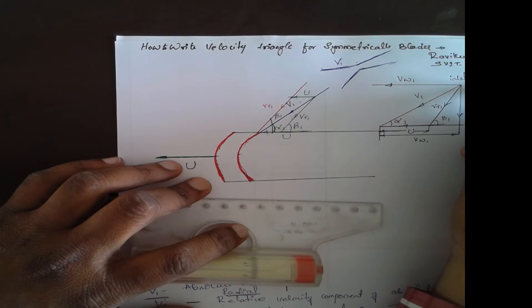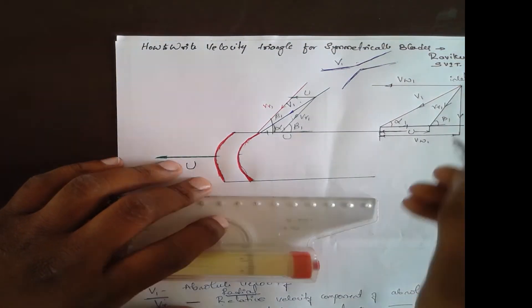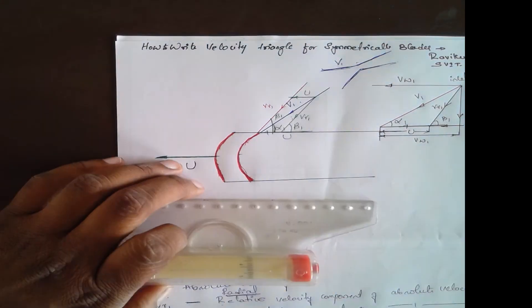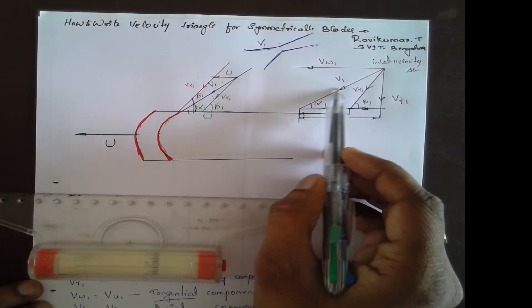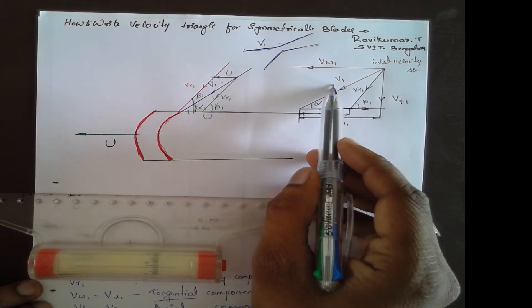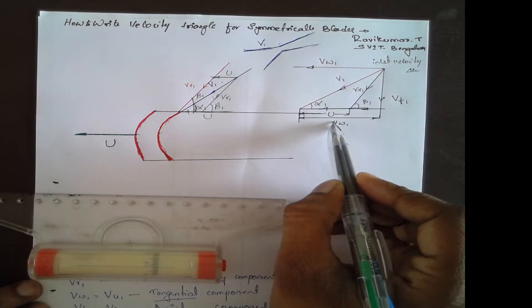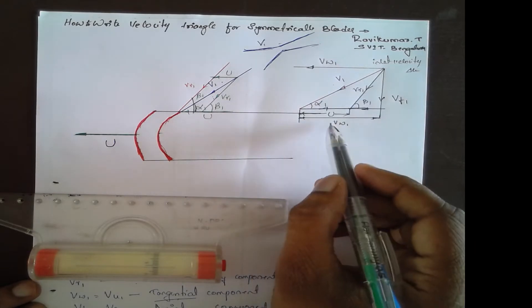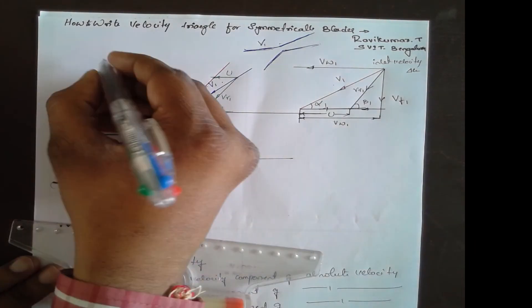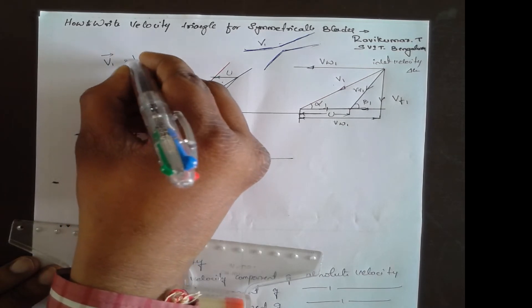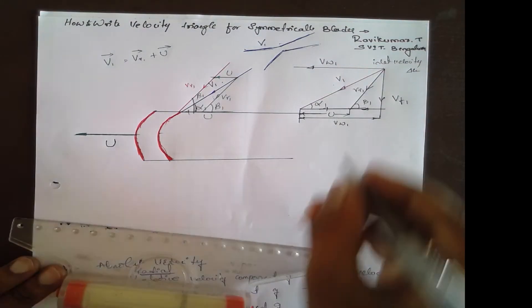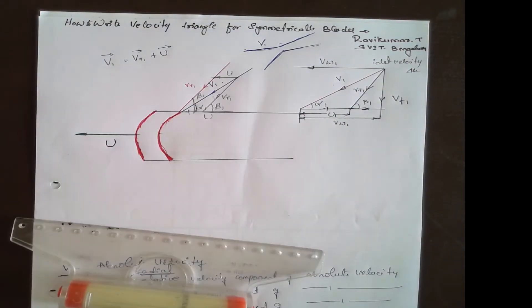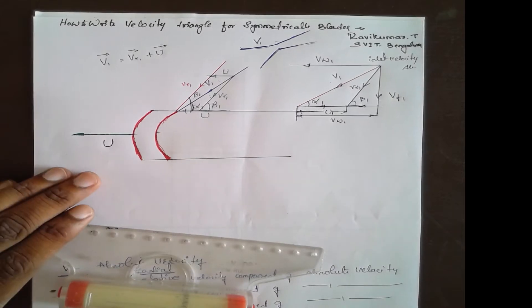This completes the inlet velocity triangle. Always remember: the direction tends towards v1, meaning v1 equals vr1 plus u as a vector addition. So v1 = vr1 + u. This is the inlet velocity triangle.